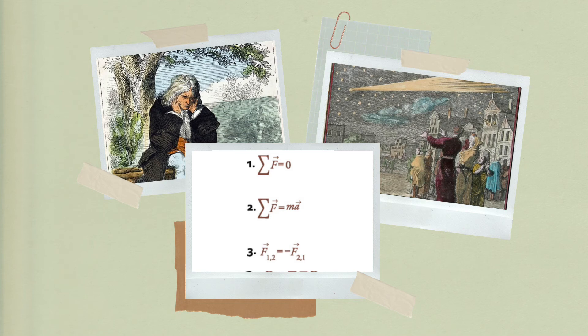These are the three laws mentioned in the book. To conclude, the greatness of Newton's theory, according to Harari, was its ability to explain and predict the movements of all bodies in the universe — from falling apples to shooting stars — using three very simple mathematical laws.